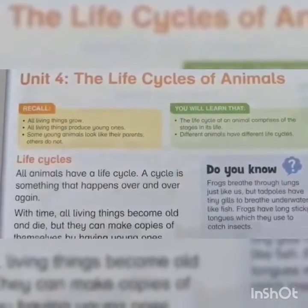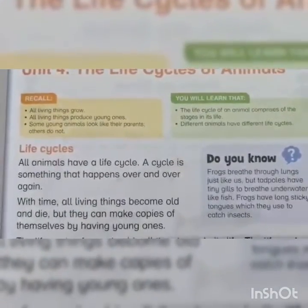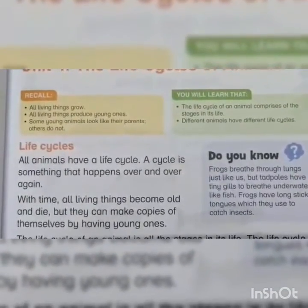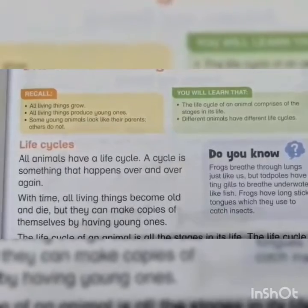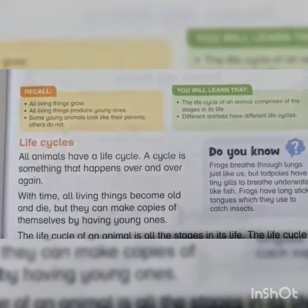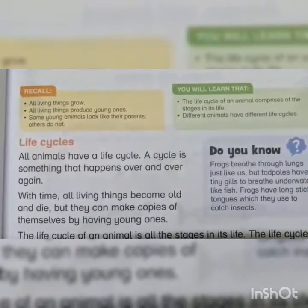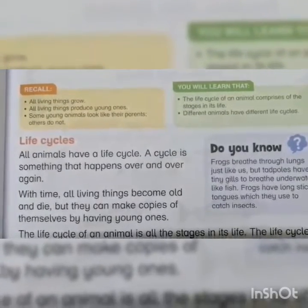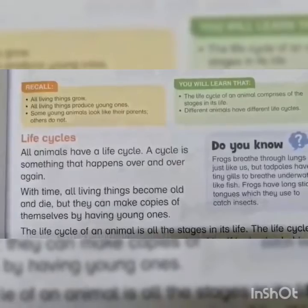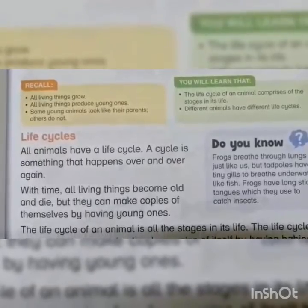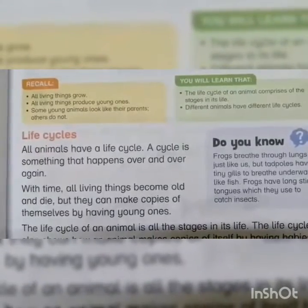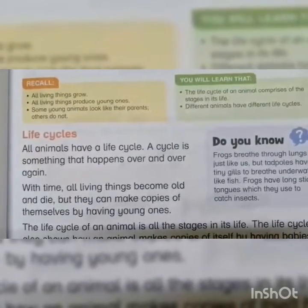What is a life cycle? All animals have a life cycle. A cycle is something that happens over and over again. It means being born, growing up, growing old and dying.